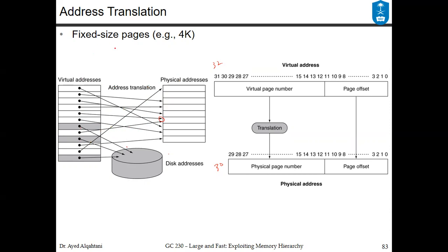Assuming the page size is 4KB, this is 2 to the power of 12. The page size tells us what the page offset is. Notice that the page offset is copied from the virtual address — these are the least significant bits from 0 to 11, since we have 12 bits — and we copy it as-is to the physical address bits 0 to 11. The translation job is to convert the virtual page number to the physical page number.